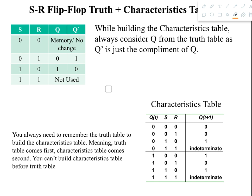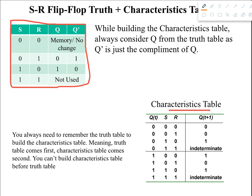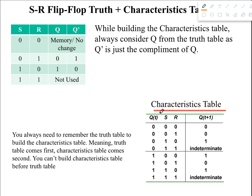Hello everyone. In this tutorial we're going to see how we can build the characteristic table from the truth table of SR flip-flop. So this is the characteristic table and we're going to build it using the truth table of SR flip-flop. In the characteristic table there are two parts: in the left part we'll write the flip-flop inputs, which would be S and R in this case, and the present state Q(t). In the right part we'll write the next state, which can be Q(t+1) or Q⁺.